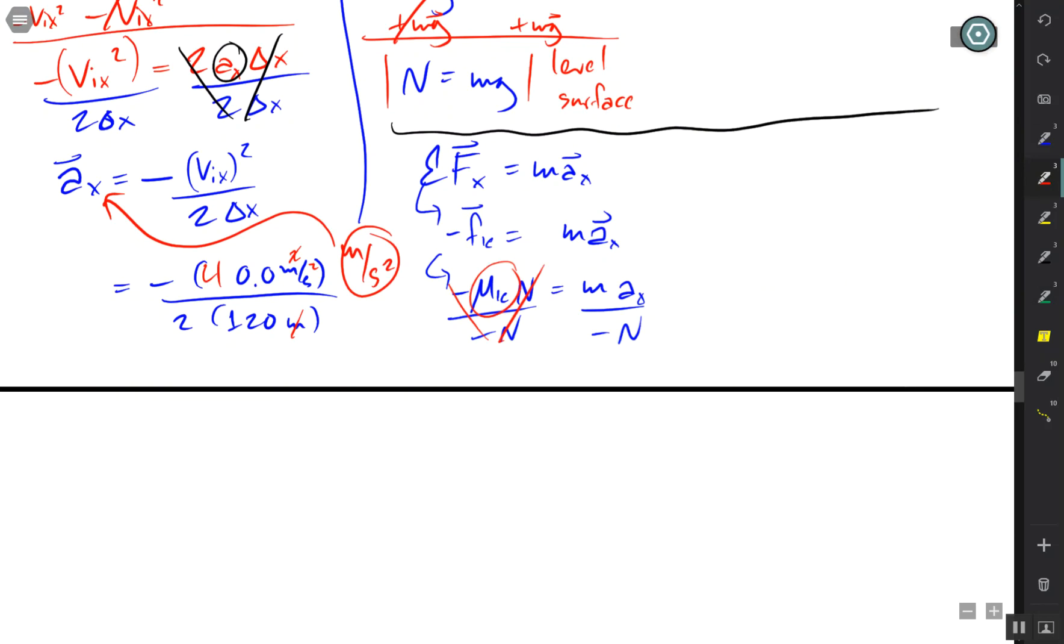All depends on what we're looking for. In this case, remember, we're looking for μ_k. And that gives us μ_k is equal to negative m a_x over N.